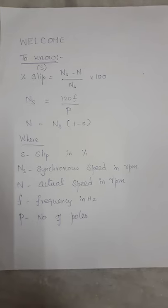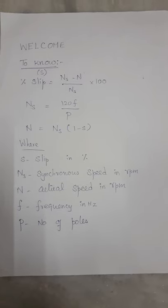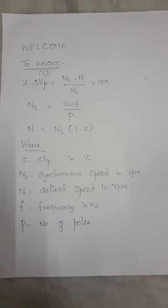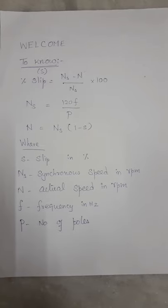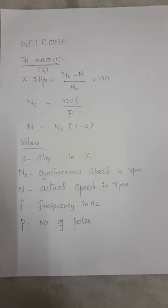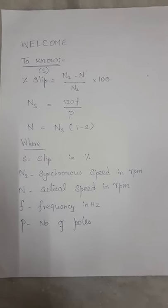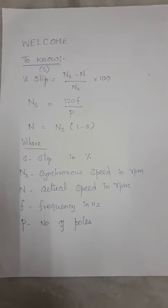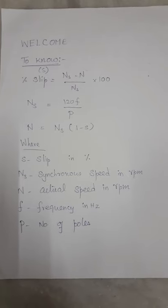Slip in percentage is equal to Ns minus N by Ns, then Ns is synchronous speed 120f by P, then N is actual speed which is equal to Ns into 1 minus S. By knowing these three formulae you can relate all the values and do the calculations very easily.